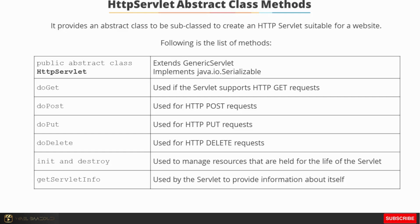The HttpServlet abstract class is an abstract class to be subclassed to create an HTTP servlet suitable for a website. Its methods include doGet, used if the servlet supports GET requests; doPost, which executes when a POST request is made to the servlet; and similarly doPut and doDelete, based on the HTTP verbs. It also includes initialization, destruction, and getServletInfo methods which provide information about the servlet.